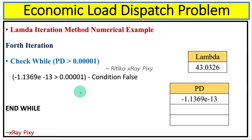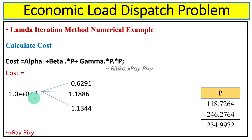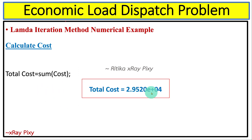For the fourth iteration, when we check the condition, it is false, so we stop and exit the loop. Next, we calculate the cost using the fuel cost equation, putting in all the values for alpha, beta, and P. We get the cost for each unit, then multiply and sum them to get the total cost.